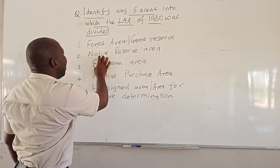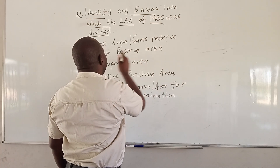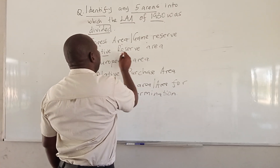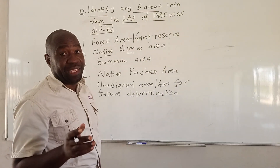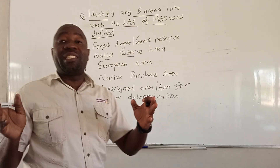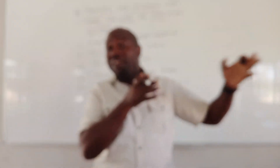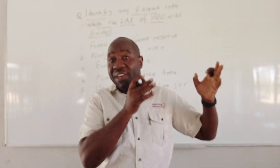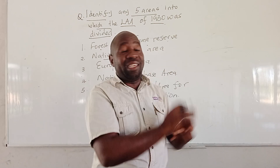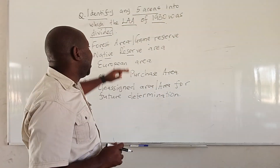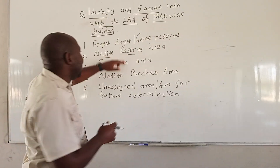There was also the Native Reserve Area. The natives — we are talking about the Africans — it was land that was reserved for the Africans. The Africans were supposed to stay in these Native Reserve Areas.